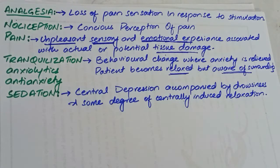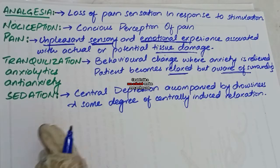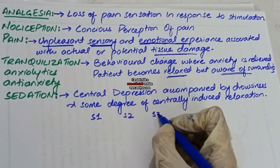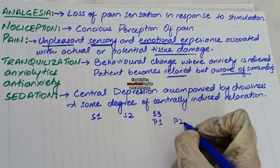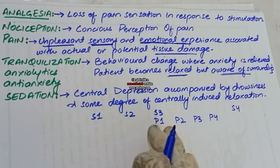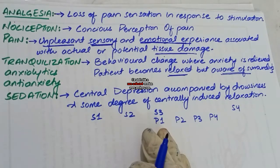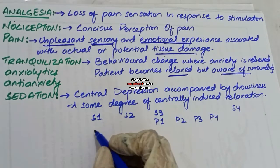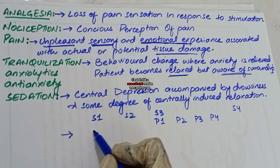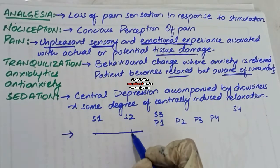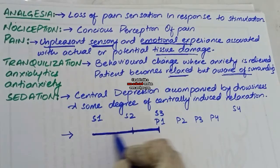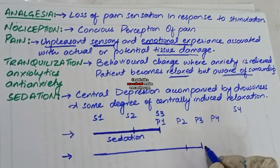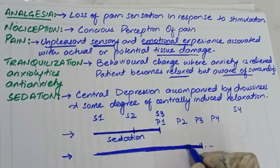During anesthesia there are four stages: stage one, stage two, stage three — made up of planes one, two, three, and four — and stage four. To clarify the difference between sedation and anesthesia: sedation occurs when a drug takes the animal from stage one to stage two or stage three plane one. When the animal reaches stage three plane two or plane three, that is anesthesia.